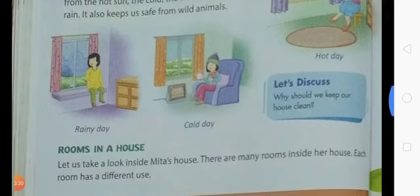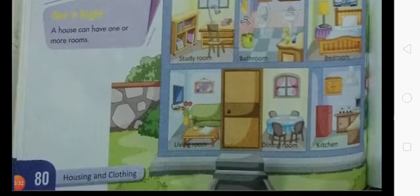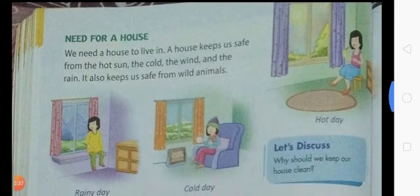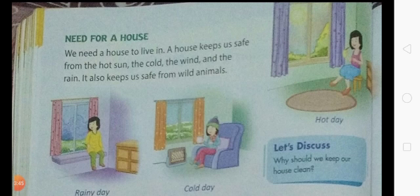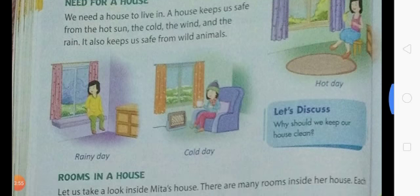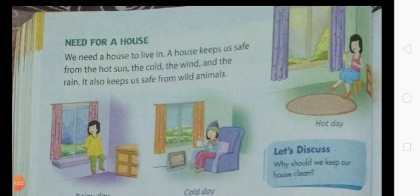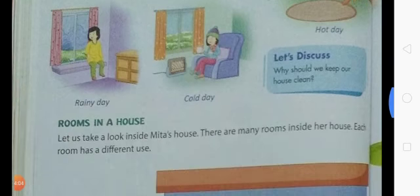Now let's come to page number 80. Here you can see: Need for a House. We need a house to live in. A house keeps us safe from the hot sun, the cold, the wind, and the rain. It also keeps us safe from wild animals. Here you can see pictures of a rainy day, a cold day, and a hot day.